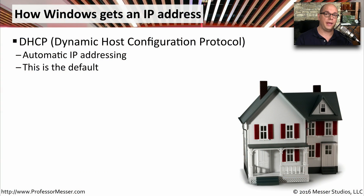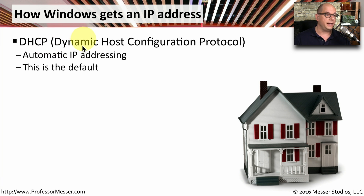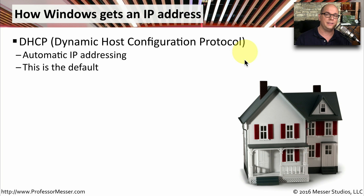Without an IP address, your computer can't communicate to anything on your local network, and it certainly can't communicate to anything on the internet. But we often don't even think about the process that occurs to get this IP address configured on our computer. That's because most of the time, this is all done automatically through DHCP, the Dynamic Host Configuration Protocol. This is a protocol that automatically assigns an IP address to your computer, so you can plug in your computer at home, connect to a wireless network at a coffee shop, and your computer automatically gets the IP address it needs and is able to communicate properly across the network.